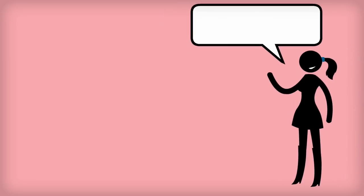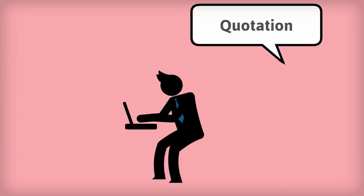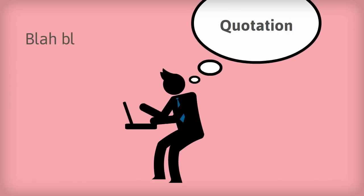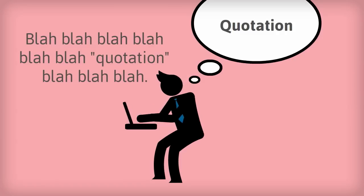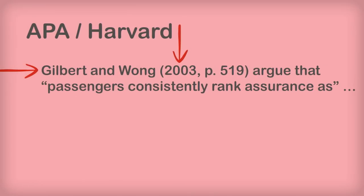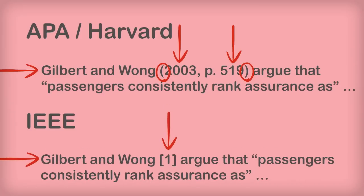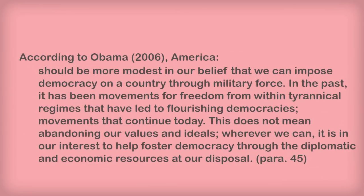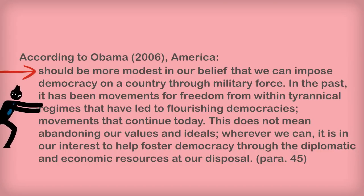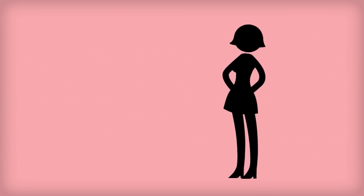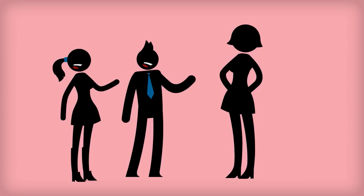A few things to remember when using quotations: use the exact words of the authors and put those words in quotation marks. Try to keep your quotations short — only quote the most important words. With APA and Harvard referencing style, you need the author, followed by the year, and a page or paragraph number in round brackets to show where the quote came from. With IEEE referencing style, you need the author followed by the reference number in square brackets. And if your quotation is over 30 words, you need to indent it. Generally, in your university assignments, you should only have a small number of short quotations. Remember to always check with your teacher or program leader about any specific referencing requirements.